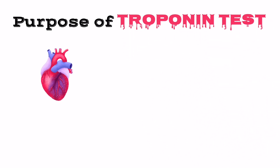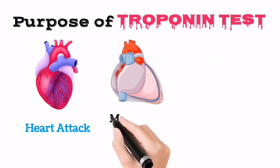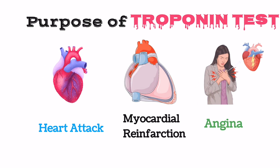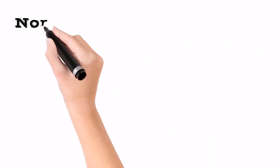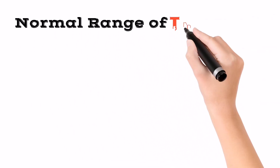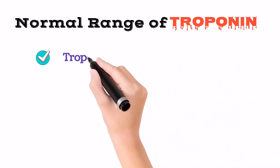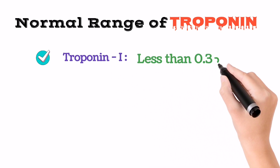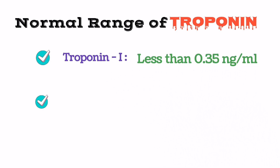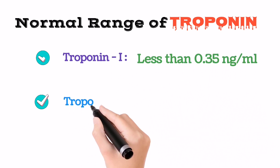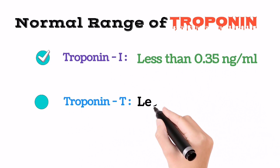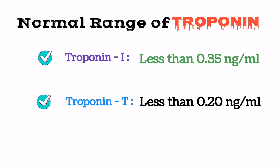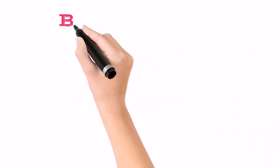What we can diagnose with the troponin test: we can diagnose heart attack, cardiac infarction, and angina. Normal range of troponin — troponin I should be less than 0.35 nanogram per ml, and troponin T should be less than 0.2 nanogram per ml.